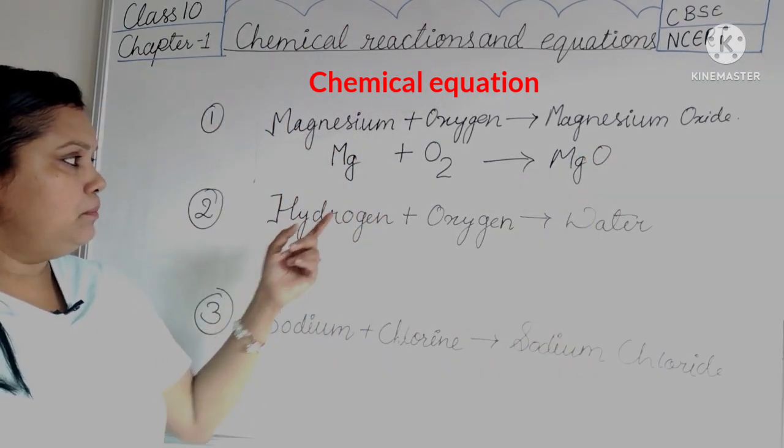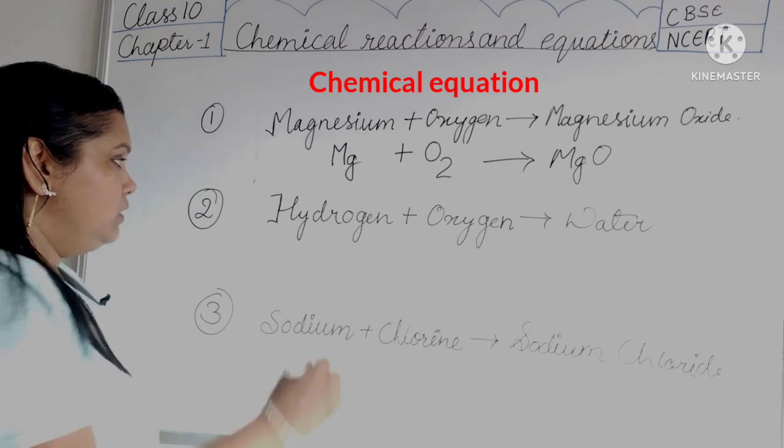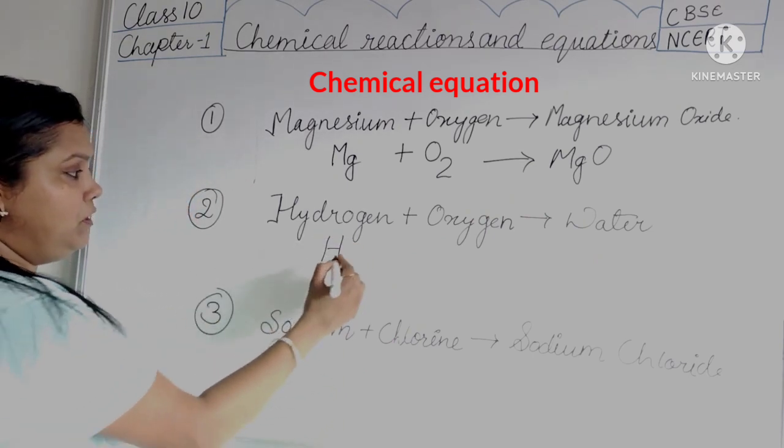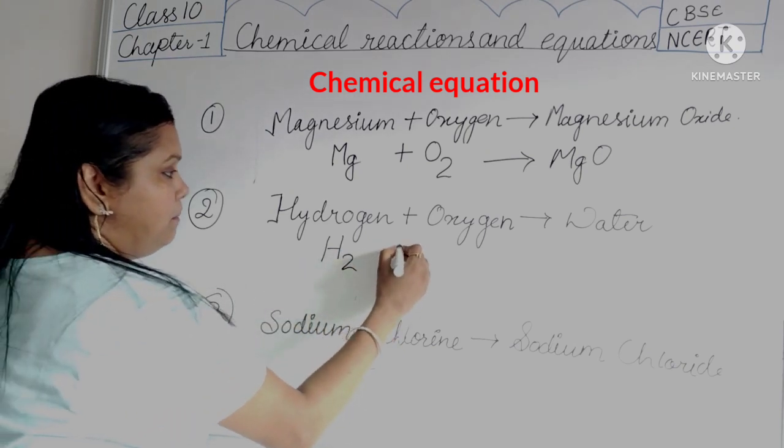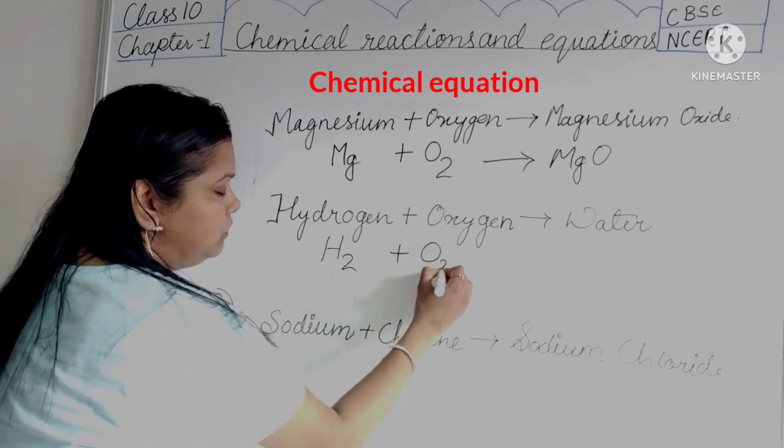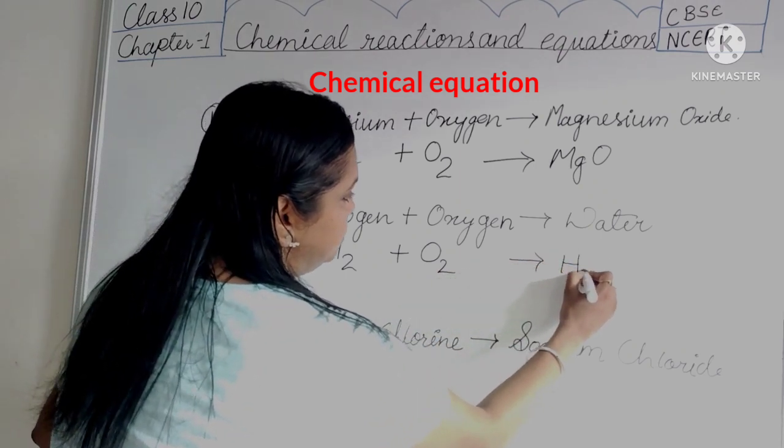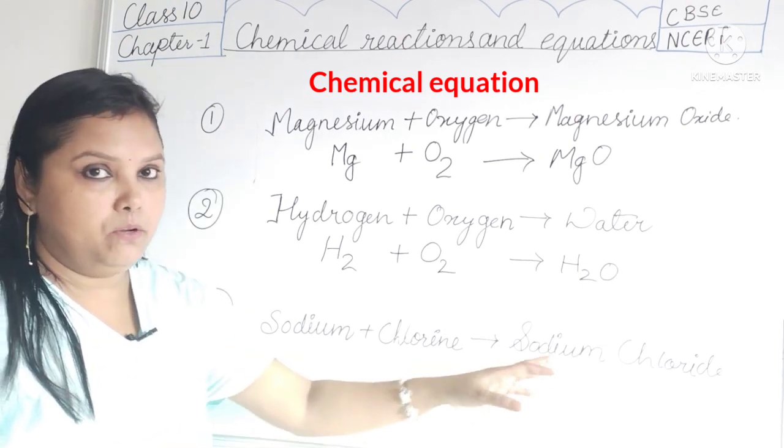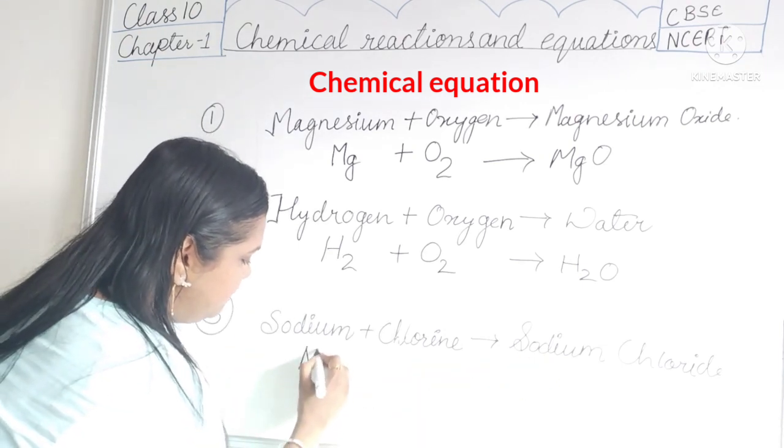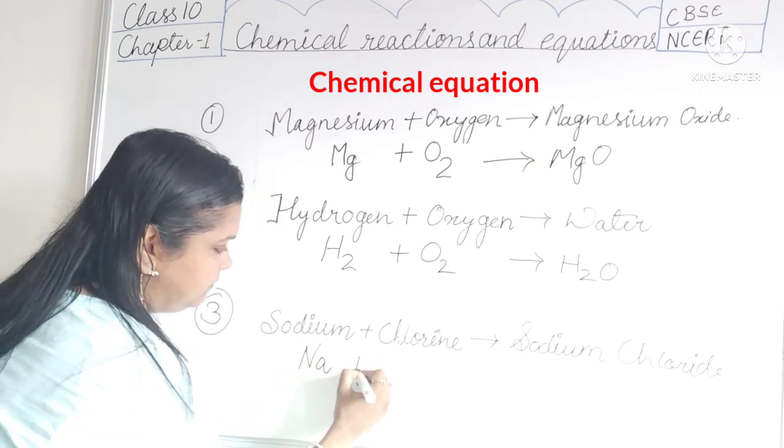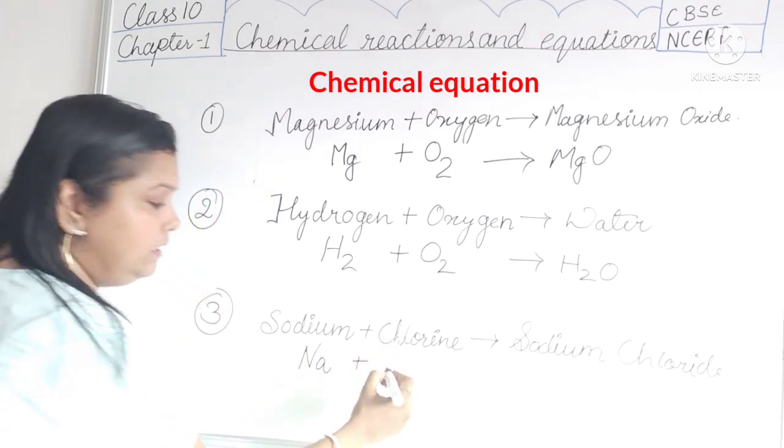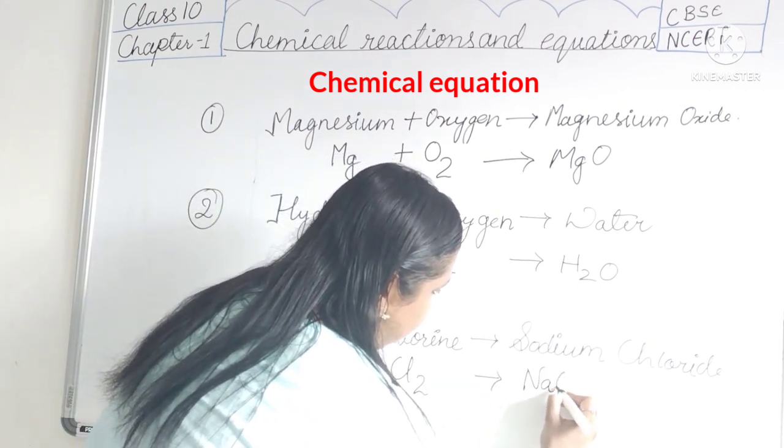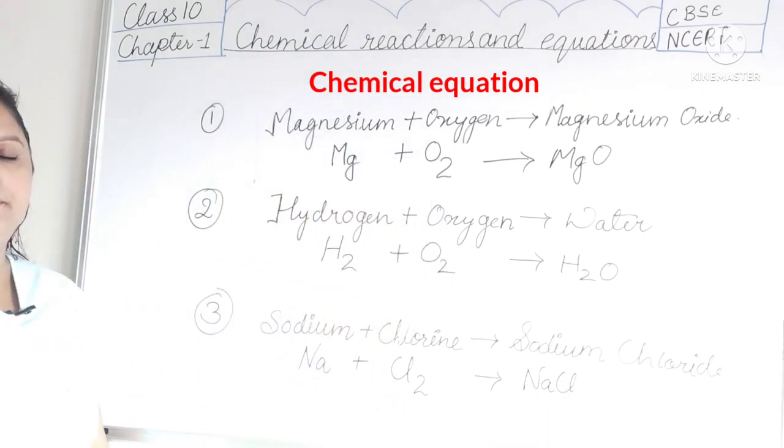The next one: hydrogen plus oxygen gives water. So the symbol for hydrogen is H but we are going to take the molecular formula of it, so we will have to write H2 plus O2 will give H2O. Sodium plus chlorine gives sodium chloride. So the formula for sodium is Na, this is a metal. Chlorine Cl2 and it will give NaCl, sodium chloride.